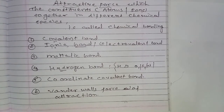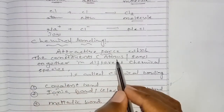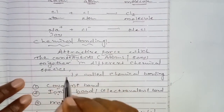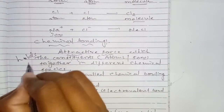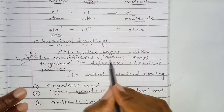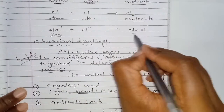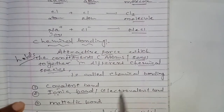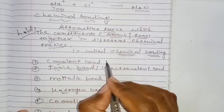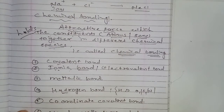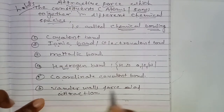The attractive force which holds the constituents — like atoms or ions — together in different chemical species is called chemical bonding. The types include: covalent bond, ionic bond, metallic bond, hydrogen bond, coordinate covalent bond, and the weak force — van der Waals force of attraction.